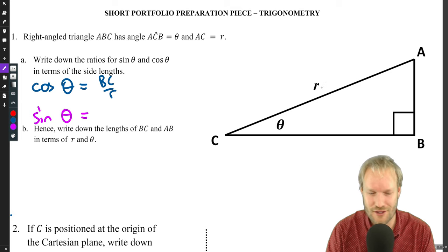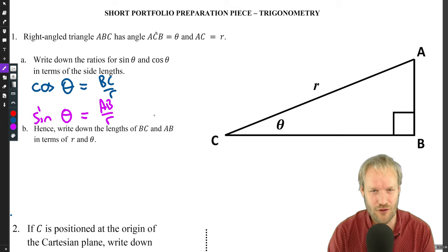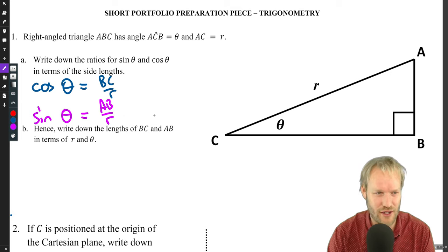Sine theta, well that's opposite over hypotenuse. So it's AB over R. Okay, so those are the two trig ratios that we're interested in.